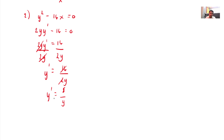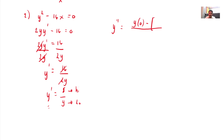For y double prime, we apply quotient rule again. Our low is y, our high is 8. So: low times derivative of high — derivative of 8 is 0 — minus high, which is 8, times derivative of low, which is y prime. All over y squared. That gives: y times 0 is 0, and we have negative 8, then we substitute the value of y prime, which is 8 all over y.